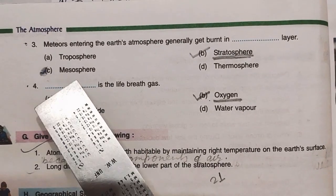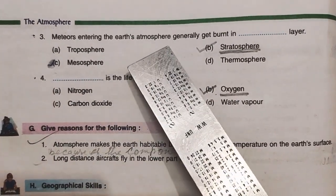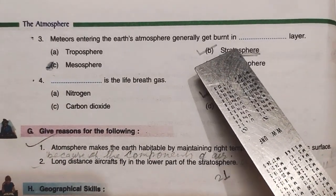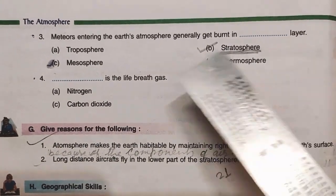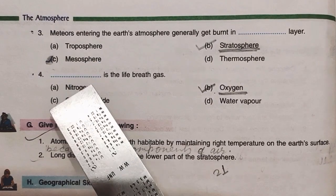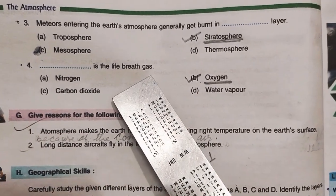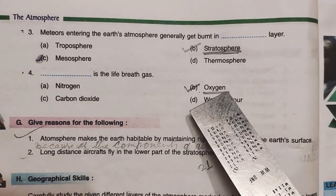Question Number 3, meteors entering the earth's atmosphere generally get burnt in layer. Answer is stratosphere. Question Number 4, is the breathe gas. Correct answer is Oxygen.